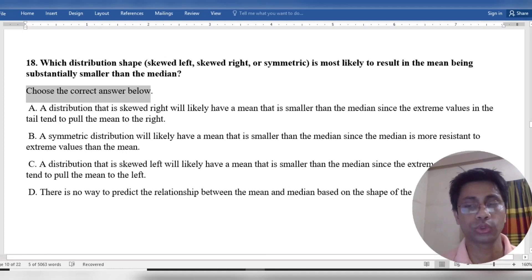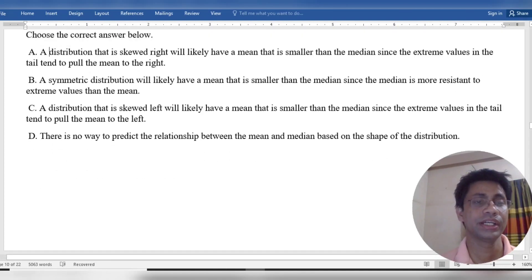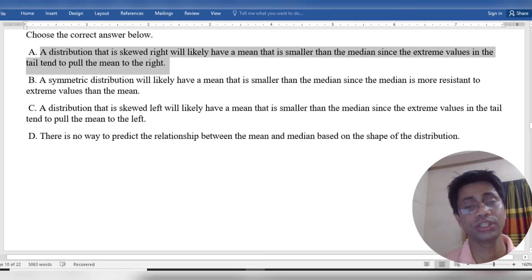We have to determine which answer is correct. A distribution that is skewed right, likely to have smaller than... is this the answer?